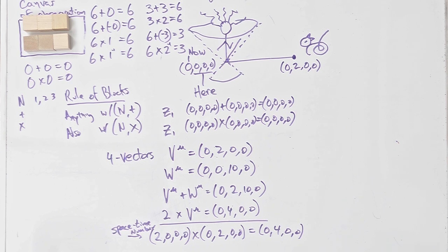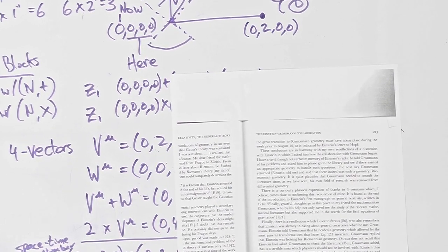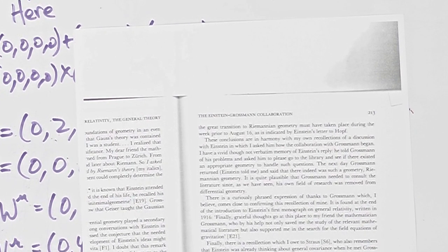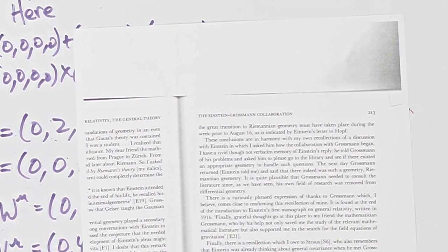So why are we doing Riemannian geometry? The answer is written up in 'Subtle is the Lord' by A. Pais — his recollection of Einstein describing how the collaboration with Grossman began. Einstein told Grossman of his problems and asked him to go to the library to find an appropriate geometry. The next day Grossman returned and said there was indeed such a geometry: Riemannian geometry.